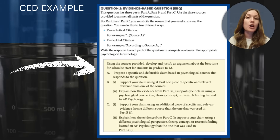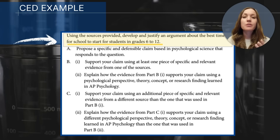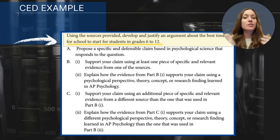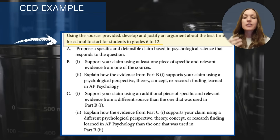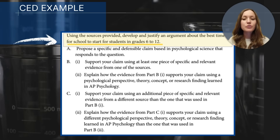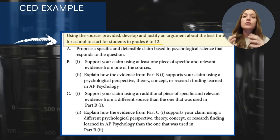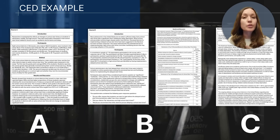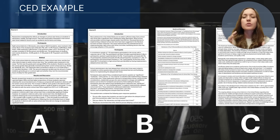You can access this same document by searching 'AP Psychology CED' online, and you'll find the sample EBQ towards the end of the PDF in the section titled 'Sample Exam Questions.' All EBQs have the same requirements in Parts A, B, and C, but each EBQ gives you a specific topic for your claim. This example prompt says: 'Using the sources provided, develop and justify an argument about the best time for school to start for students in grades 6 to 12.' So the claim must revolve around school start times. Three sources of varying lengths are provided, and students read them while thinking about the claim they'll make.